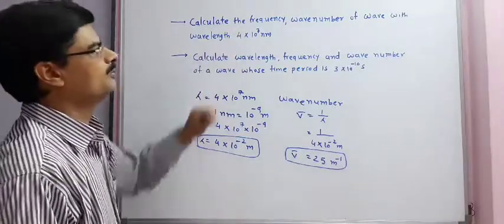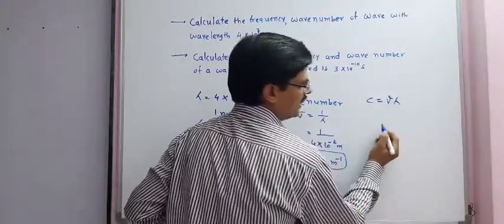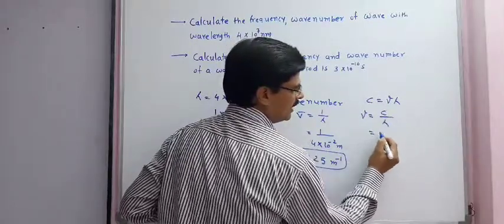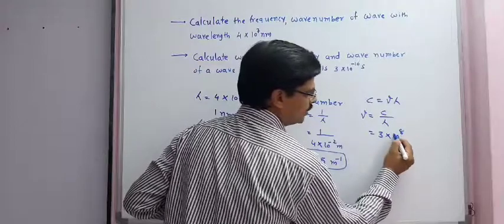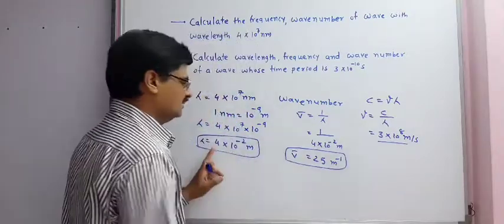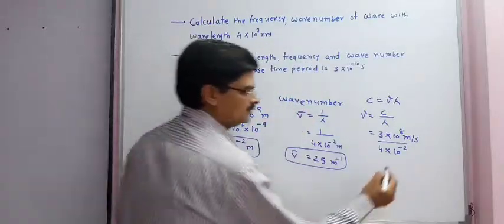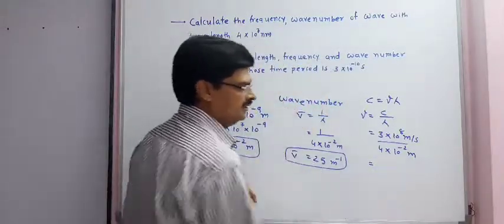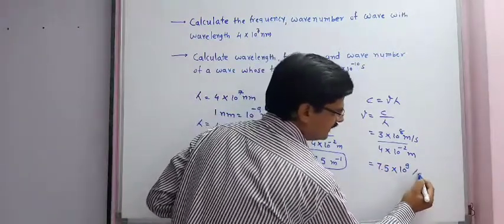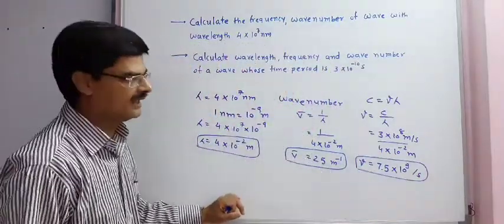Now to find frequency: as C = nu × lambda, therefore nu = C / lambda = (3 × 10⁸) / (4 × 10⁻²) = 7.5 × 10⁹ per second. So frequency is equal to 7.5 × 10⁹ per second.